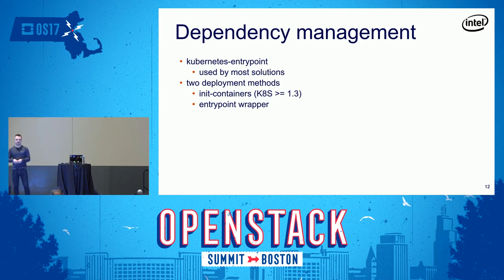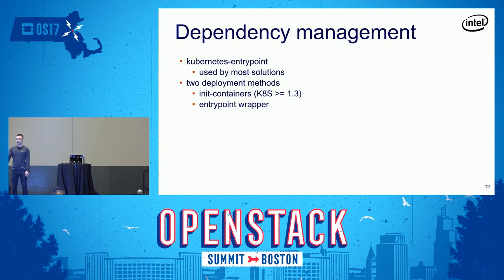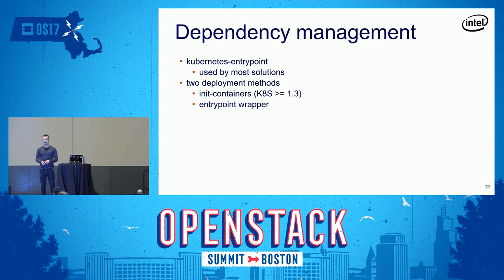The initial approach of deploying the entry point inside the container had disadvantages — you couldn't just take an image from the internet and use it. With Kubernetes 1.3, the init container feature was introduced, allowing you to put the Kubernetes entry point in a separate container that holds execution of the application container until all dependencies are met, then exits and starts the actual application. This was developed as part of Staconetis, but it seems no longer maintained — anyone willing to maintain it and expand their Go skills is welcome to join.